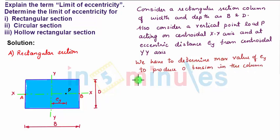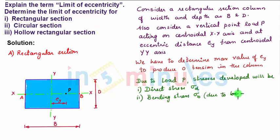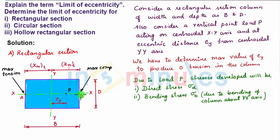Due to load P there will be two kinds of stresses: first a direct stress sigma D plus bending stress sigma B due to bending of column about YY axis. Due to bending, point B will be subjected to maximum compression and point A will be subjected to maximum tension.